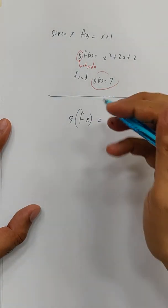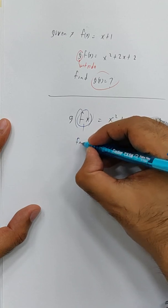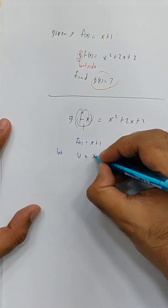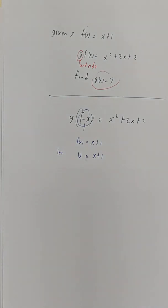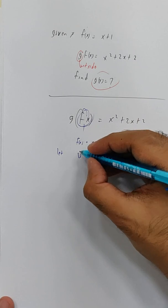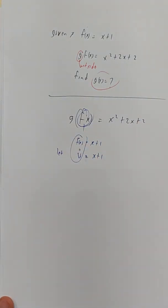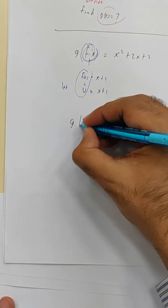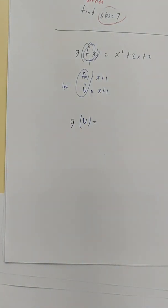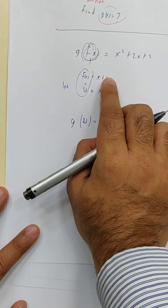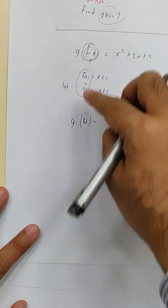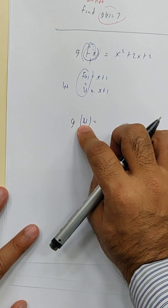What do we know about f(x)? f(x) is x plus 1. Let U equal to x plus 1. Okay. So right now, we are changing our f(x) equals to U. Our f(x) equals to U. So g of U. Alright. f(x) is x plus 1. We determine right now, we change our f(x) becomes U. So U equals to x plus 1. The f(x) here becomes U. Are you okay this far?